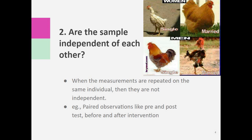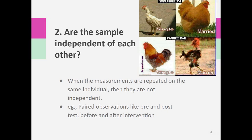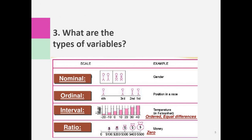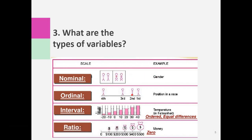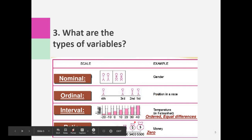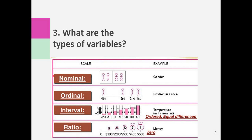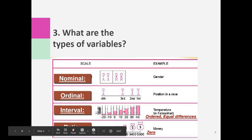The next step is what type of variable we are dealing with. There are four types: nominal, ordinal, interval, and ratio. Nominal is just a name. Ordinal has an order — for example, mild, moderate, severe. Interval does not have an absolute zero, but ratio does have an absolute zero. For statistical analysis purposes, we can club nominal and ordinal into categorical variables, and interval and ratio into continuous variables.